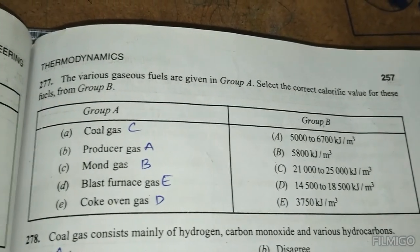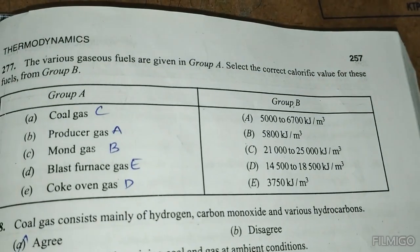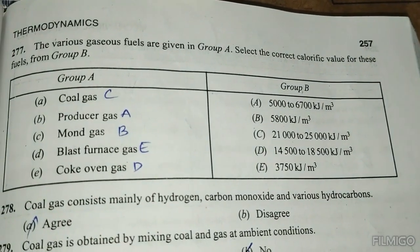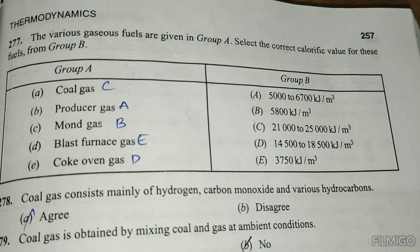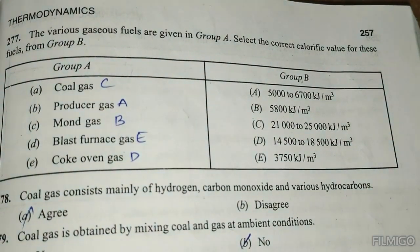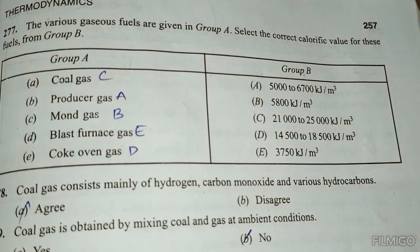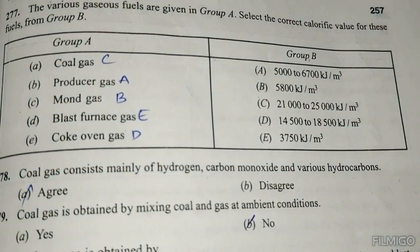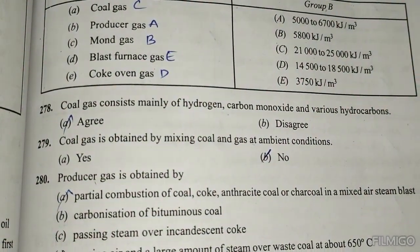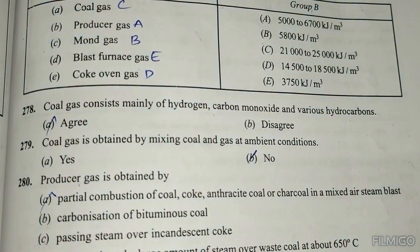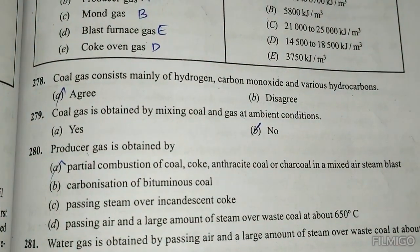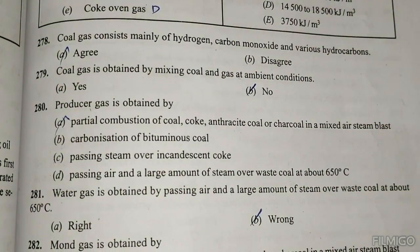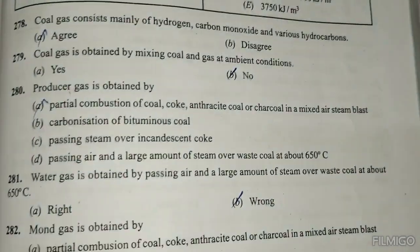The calorific value of coal gas is approximately 21,000 kJ/m³. Producer gas has a calorific value of about 5,000 to 4,000 kJ/m³. Mound gas is 50,000 to 55,000 kJ/m³. Blast furnace gas is approximately 3,500 kJ/m³. Coal gas consists mainly of hydrogen, carbon monoxide, and various hydrocarbons. Producer gas is obtained by partial combustion of coal, coke, or anthracite coal mixed with blasts of air.